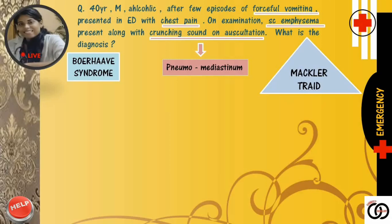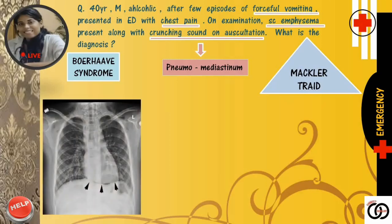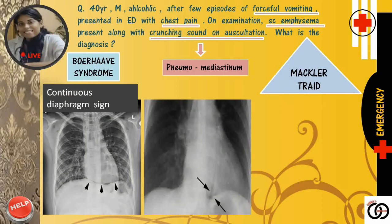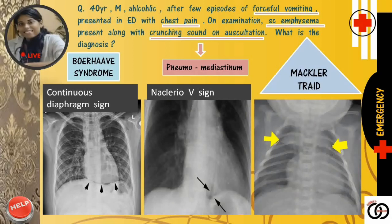On chest X-ray, let's see the findings. See the first film — appreciate the continuous diaphragm sign. This is because air collects beneath the pericardium, so the central part of the diaphragm becomes visible as well. See the second film — appreciate the V, the air outlining the descending aorta and the left diaphragm. This V is classically described for pneumomediastinum secondary to esophageal rupture — this is known as Naclerio's V sign. And see the third film — appreciate the spinnaker sail sign, which is actually air outlining the thymic lobes in a child.